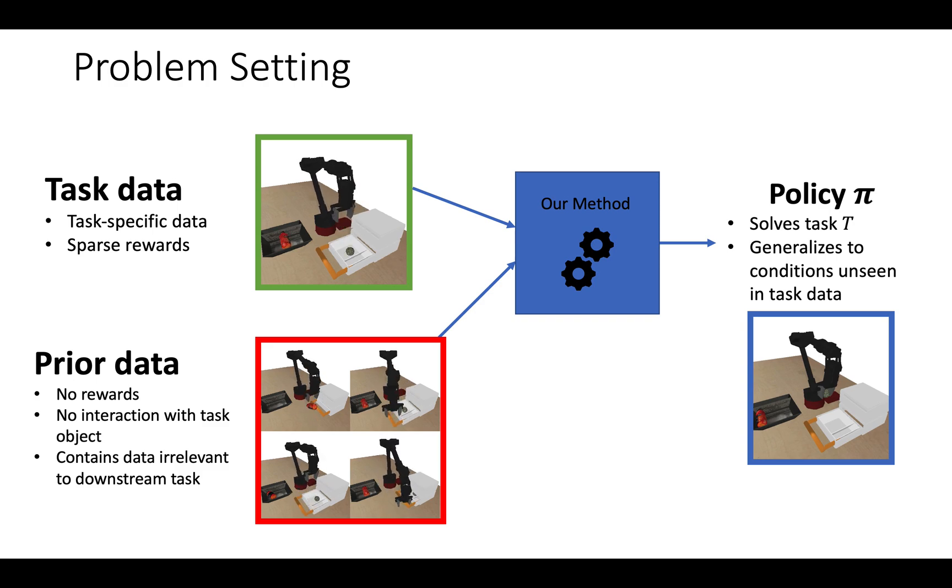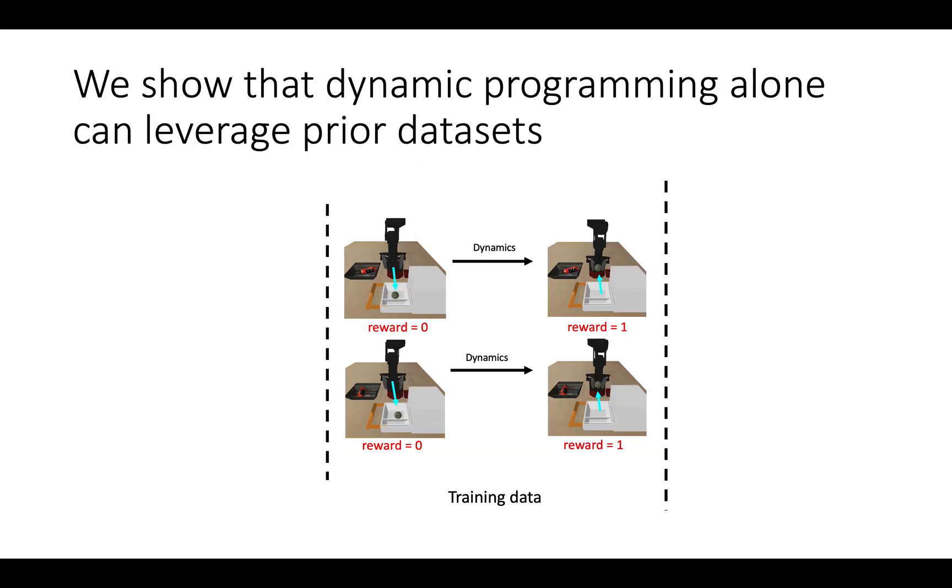In this paper, we primarily operate in an offline reinforcement learning setting, making use of only previously collected datasets. We start by running Q-learning on the task data, which allows for Q-values to propagate from high reward states to states that are further back from the goal.